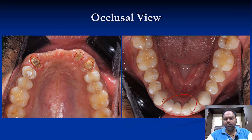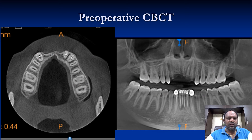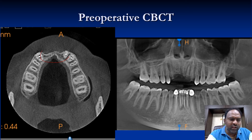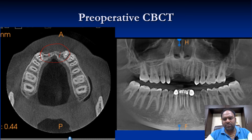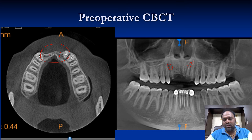We took the CBCT scan. It was not surprising for us, but the amount of bone volume present here was very less. This is a normal resorption pattern — the amount of bone usually resorbs after the tooth has been extracted. In this case there was also some cyst present, and the root canals which were done were not up to the mark.